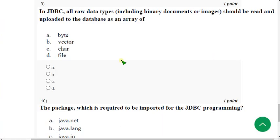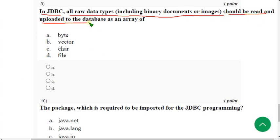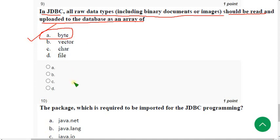Ninth question: in JDBC, all raw data types including binary documents or images should be read and uploaded to the database as an array of bytes. Mark option A.